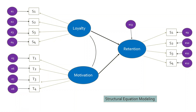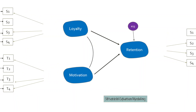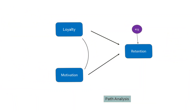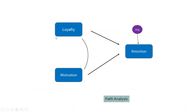When I convert this into path analysis, see what happens — we no longer have the measured errors. Now we are having only observed variables.